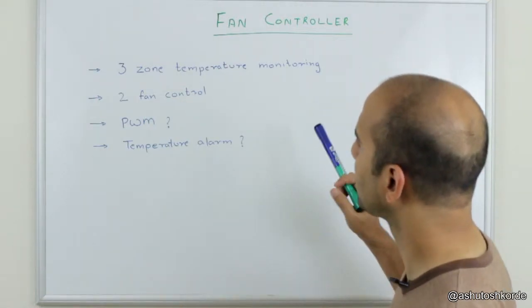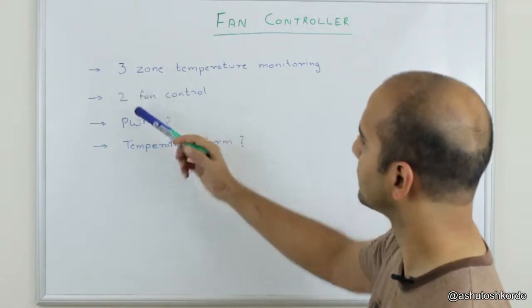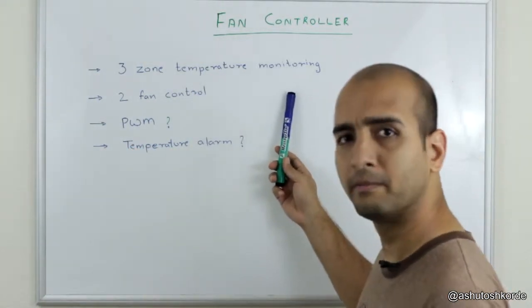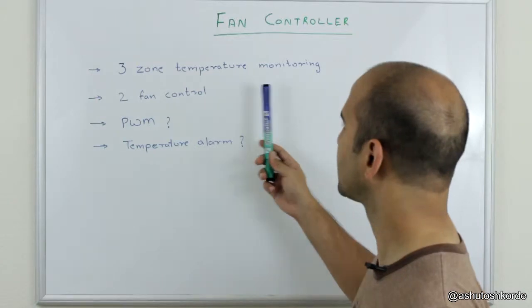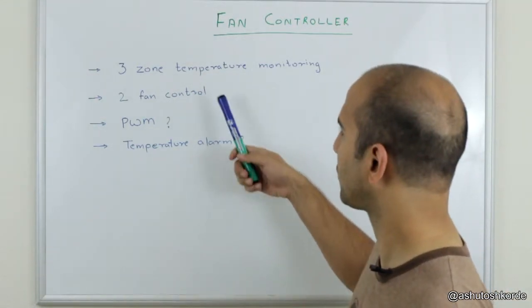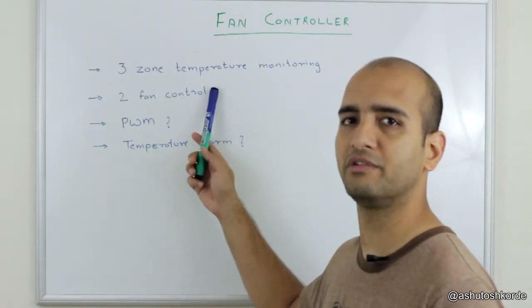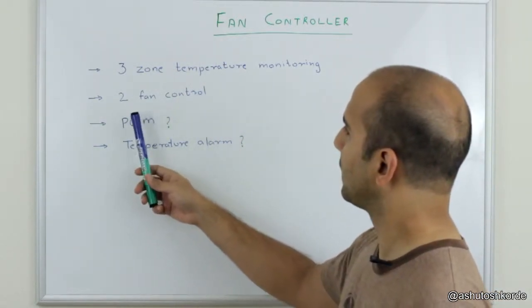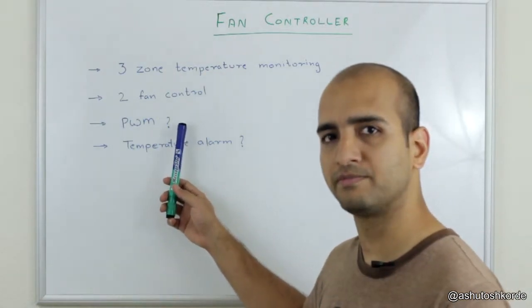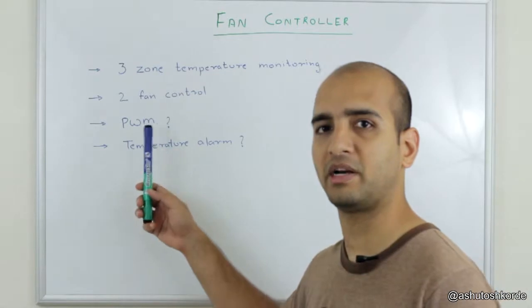pretty simple. The first thing that I want is I want at least three zones of temperature monitoring. This is because I have about six drives in it and I can probably combine one temperature monitor for two drives. And I would also like to have two separate fan controls, or it should be able to control two separate fans.